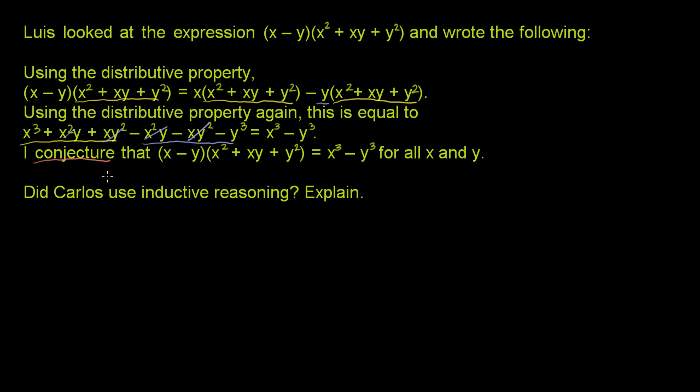A conjecture is a statement or a proposition that is unproven, but it's probably going to be true. It's unproven, but it seems reasonable or it seems likely that it's true. This isn't a conjecture, this is proven.